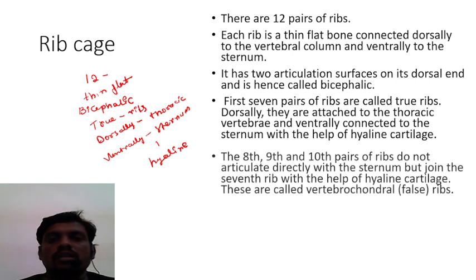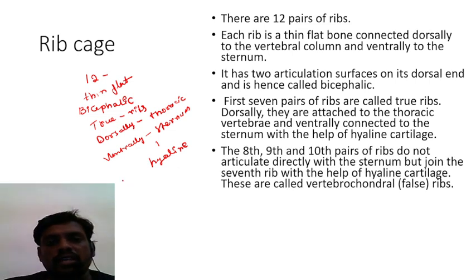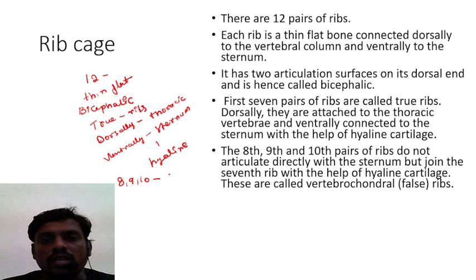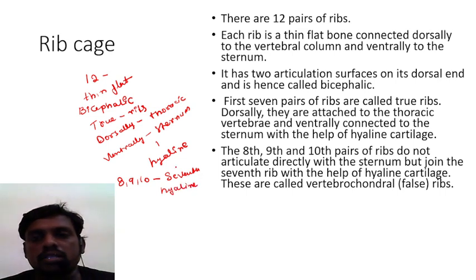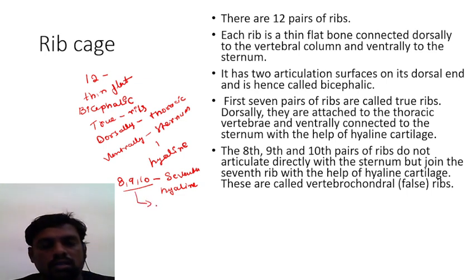The eighth, ninth, and tenth pairs of ribs do not articulate directly with the sternum. Instead, they are joined to the seventh rib bone with the help of hyaline cartilage. These three rib bones are together called vertebrochondral ribs.